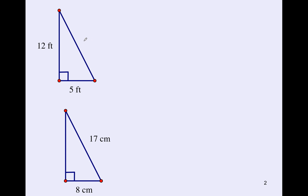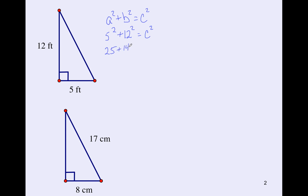I have a right triangle. Before I find the perimeter, I have to know what all three sides are. So the first thing I'm going to do is find the third side of this triangle. You can pause the video, see if you can finish it yourself, and then check your answer. We're looking for the hypotenuse. I'm going to take the square root of both sides. C is equal to 13.